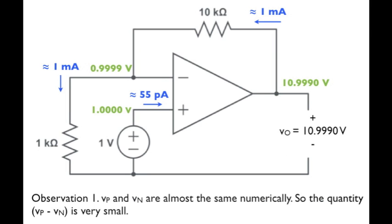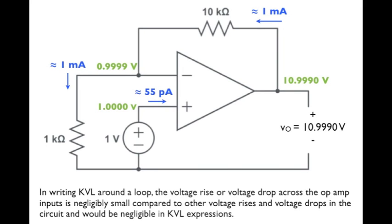Well, observation number one. The node voltages at the inverting input and non-inverting input are almost the same. One is 1.0000, the other one is 0.9999. They only differ by 100 microvolts. Consider the implication of that in writing KVL around loops in this circuit. If we write Kirchhoff's voltage law around a loop that contains the voltage rise or voltage drop across the op-amp input terminals, we see in this circuit that that quantity would be orders of magnitude less than other voltages that appear in the KVL expression. So, it could be neglected without any loss of accuracy or significance.